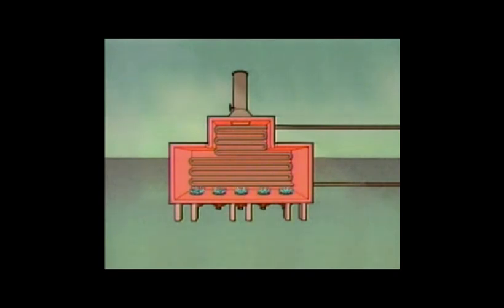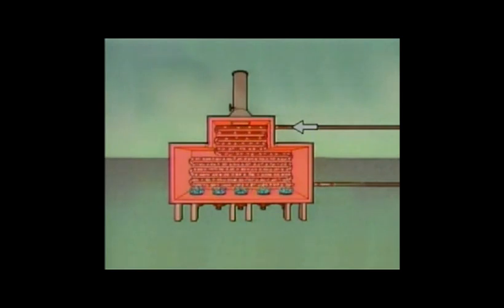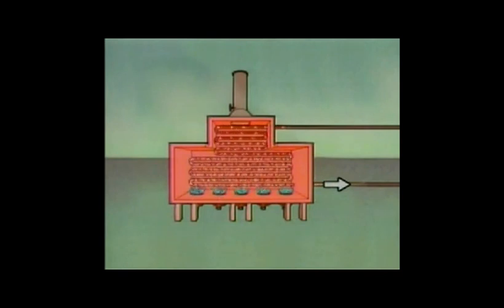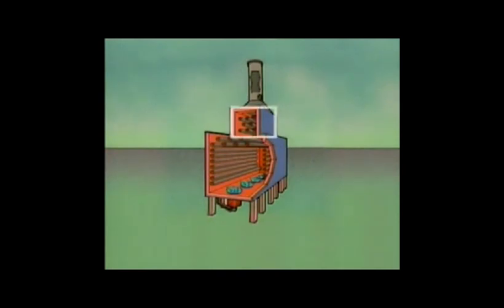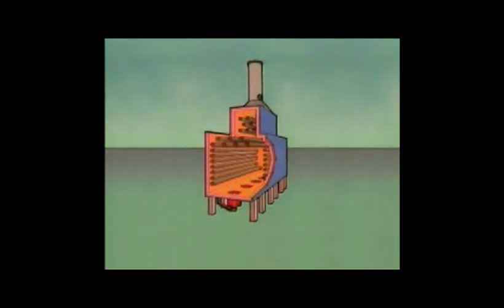Inside this furnace, tubes carry the process fluid through the furnace. The process fluid enters near the stack, passes through the tubes, and leaves near the bottom by the burners. The tubes are grouped into two major areas: the convection section, which is closer to the stack, and the radiant section, which is closer to the burners. The shell of the furnace is lined with a heat-resistant material called refractory.